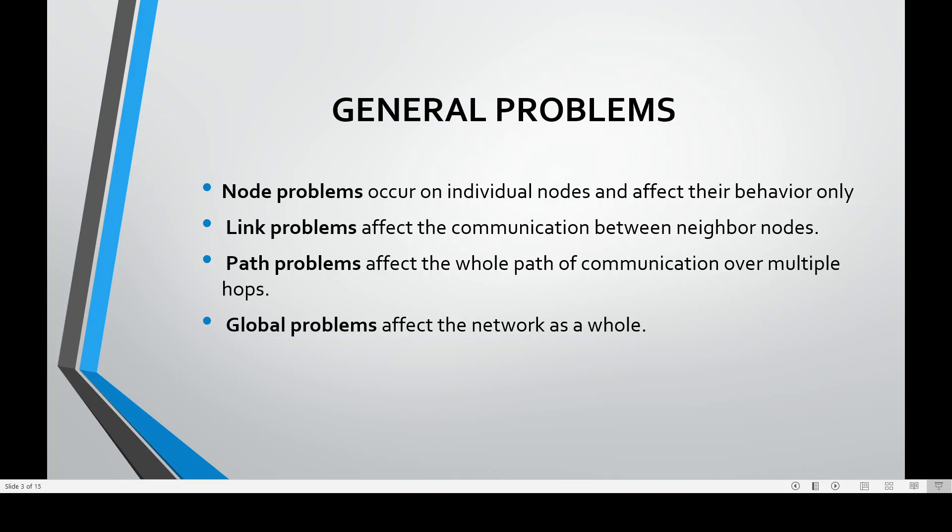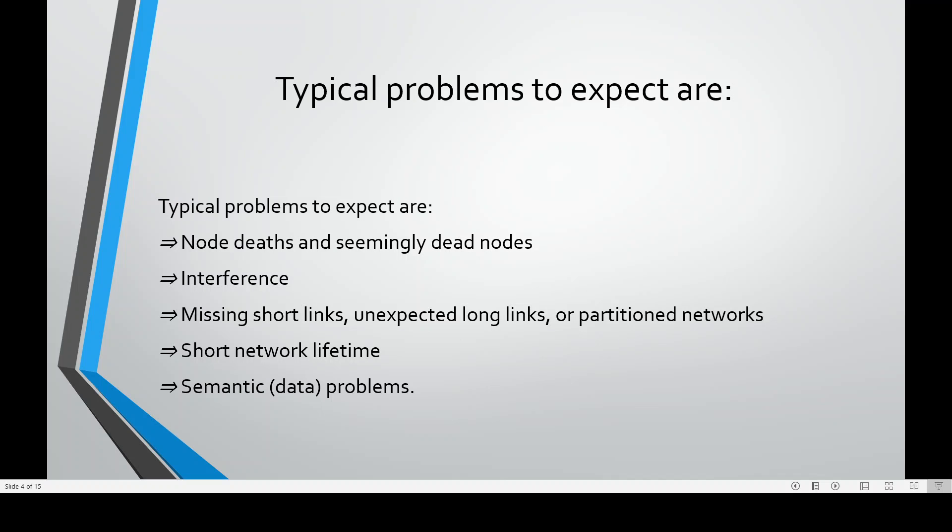The general problems that usually occur in a WSN application are node problems, link problems, path problems, and global problems. Node problems occur on individual nodes and affect their behavior only. Link problems affect the communication between neighbor nodes. Path problems affect the whole path of communication over multiple hops, and global problems affect the network as a whole.